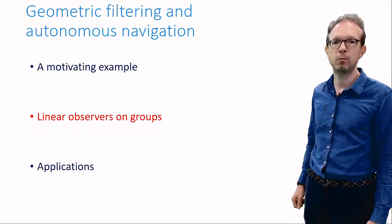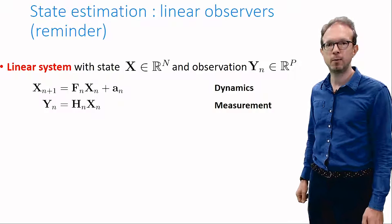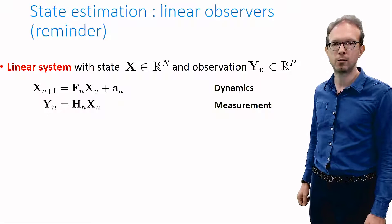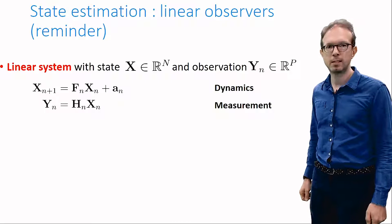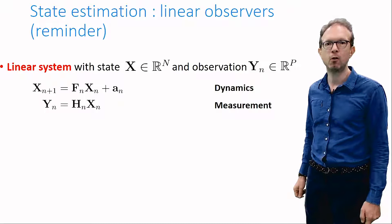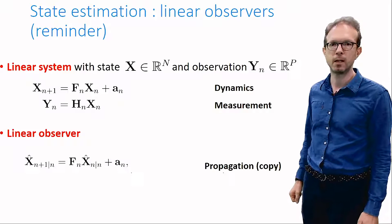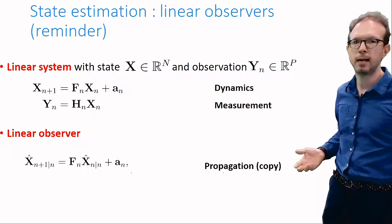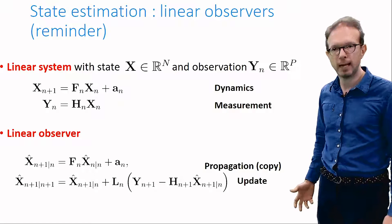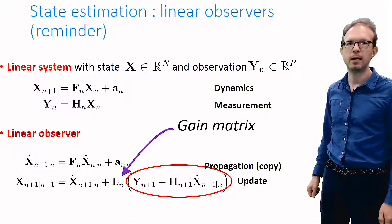To start things off, I'd like to remind a few facts on linear systems and observers, because the geometric theory I'm about to show uses matrix groups to emulate linear observers and some of their key properties. Consider a linear system with state X, input A and output Y. The output Y is a partial measurement of the state X. The goal of state estimation or observer design is to find X in real-time using the dynamical model and the measurements Y. To this aim, we build a linear observer, which consists of a copy of the dynamics where we propagate the current estimated state — the propagation step — and a correction of the state in light of the measurement Y called the update step. The correction is based on the error between the measurement Y and its predicted value, and a gain matrix that converts this prediction error into a correction applied to the estimated state, in order to nudge it towards the true state.